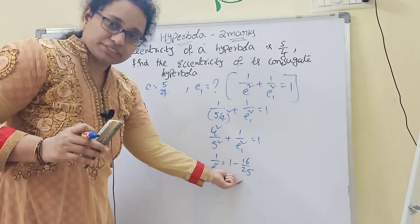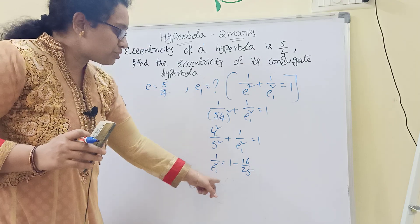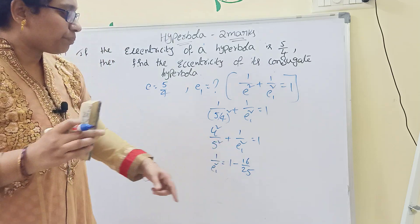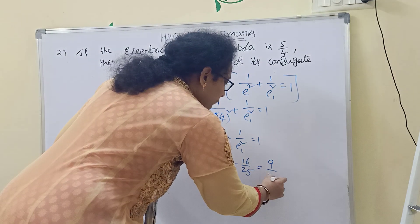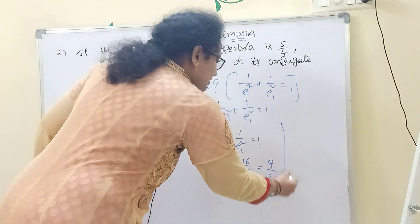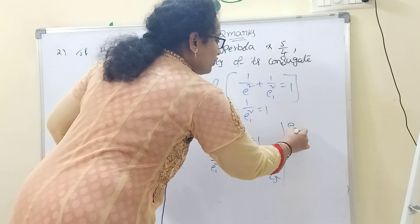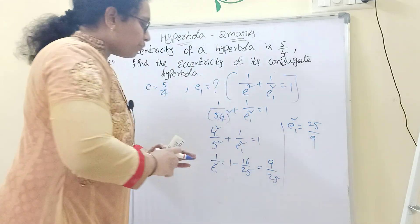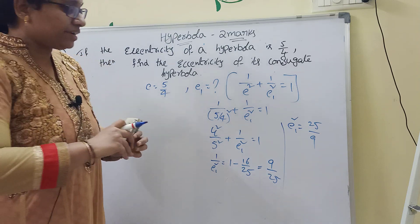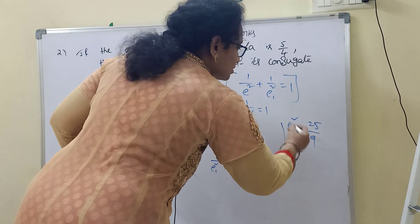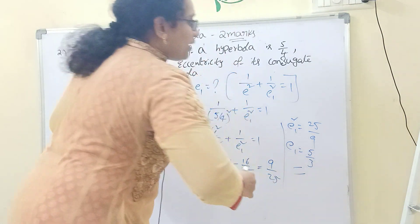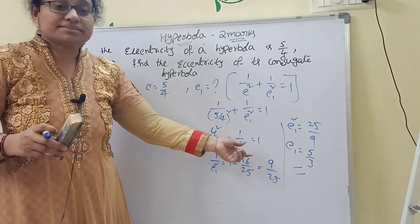Continuing: 1/e₁² = 1 − 16/25 = 9/25. Taking the reciprocal, e₁² = 25/9. Taking the square root, e₁ = 5/3. Therefore, the eccentricity of the conjugate hyperbola is 5/3.